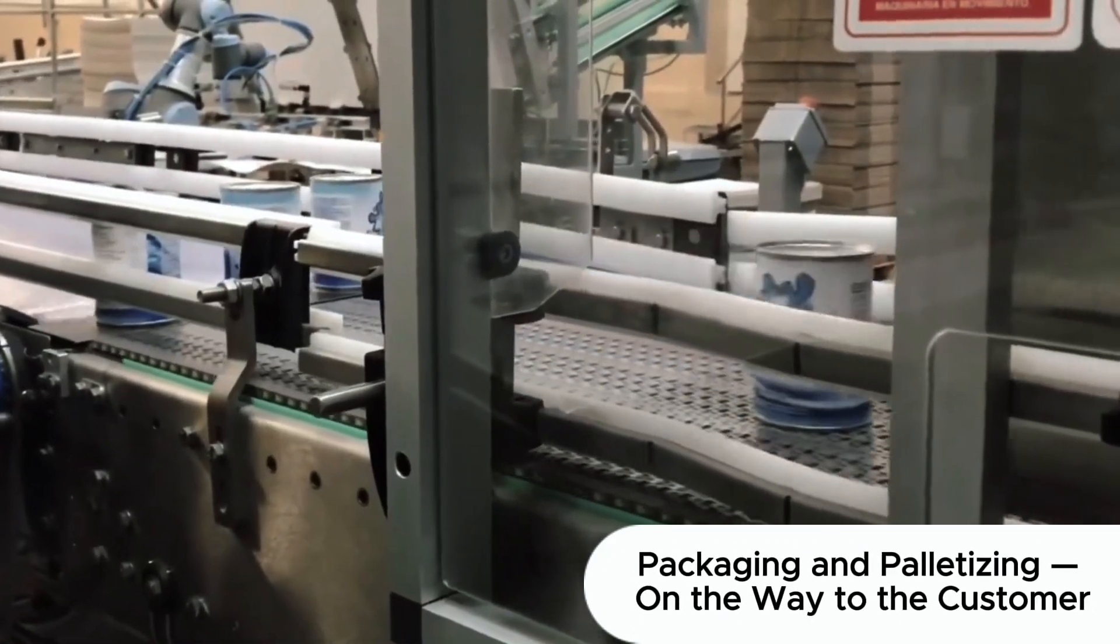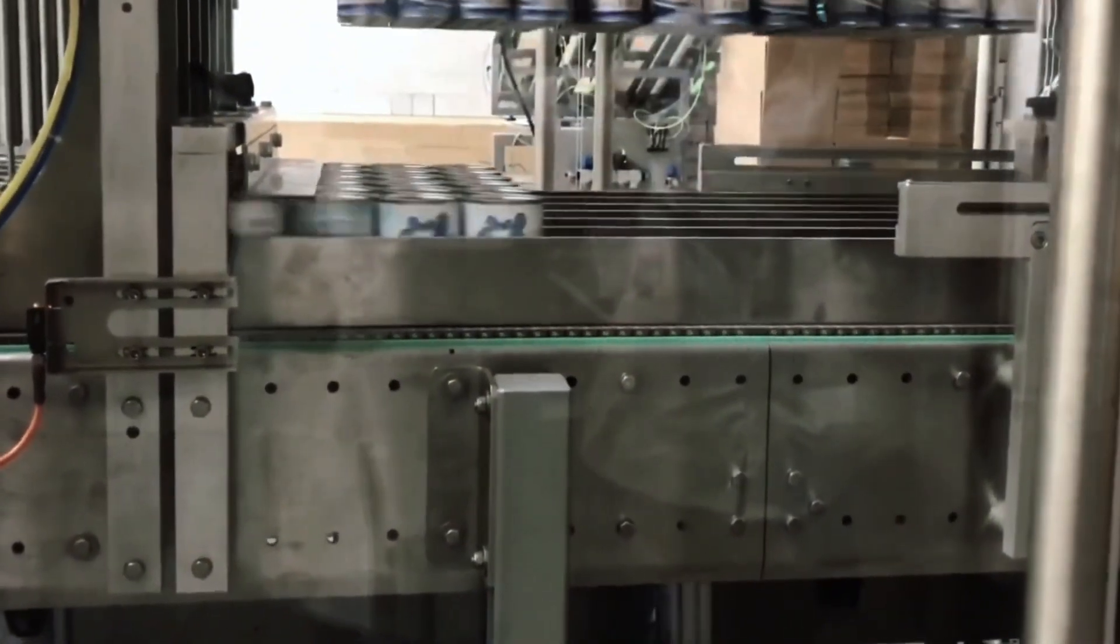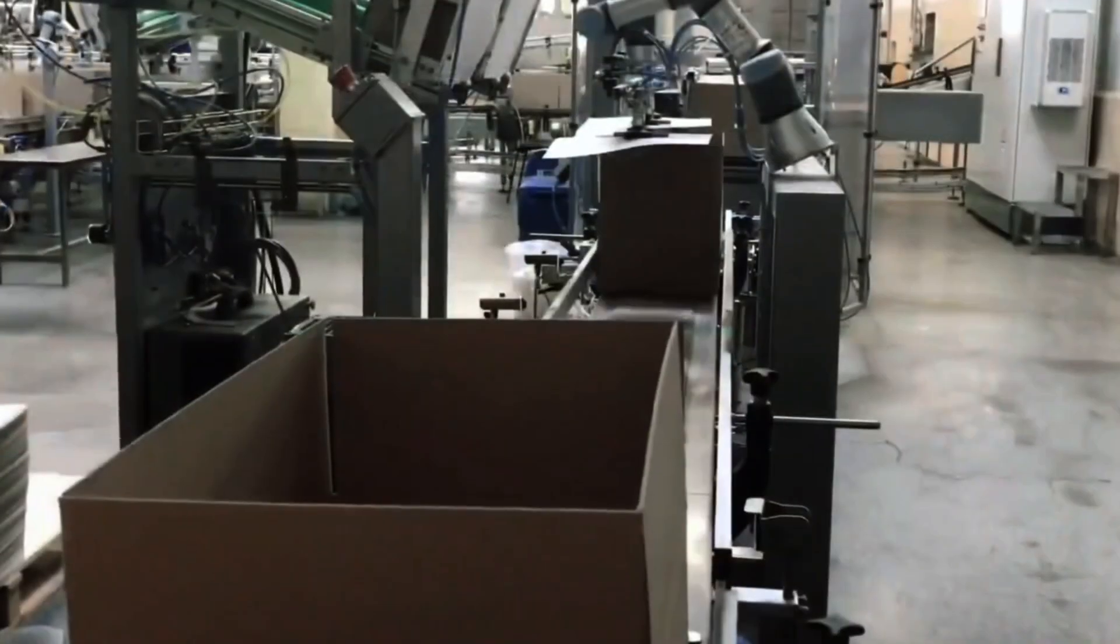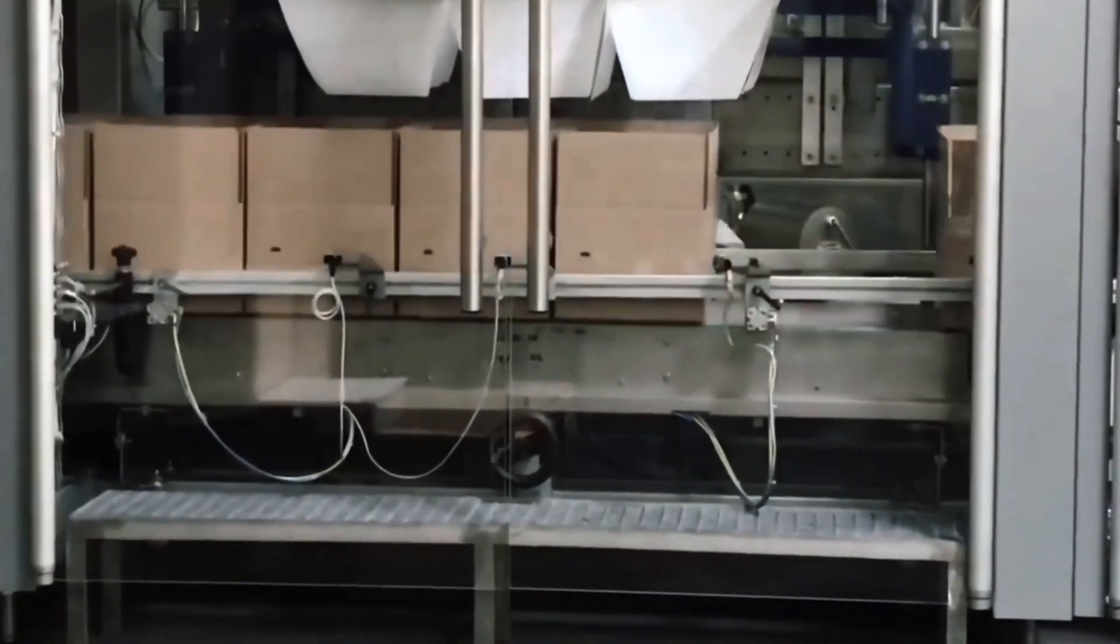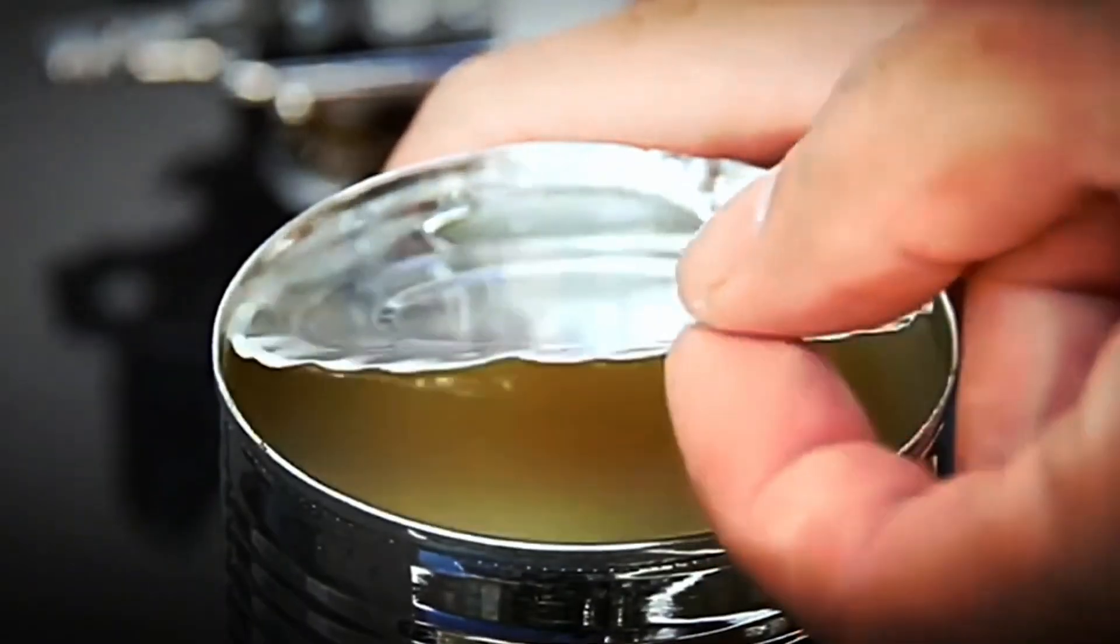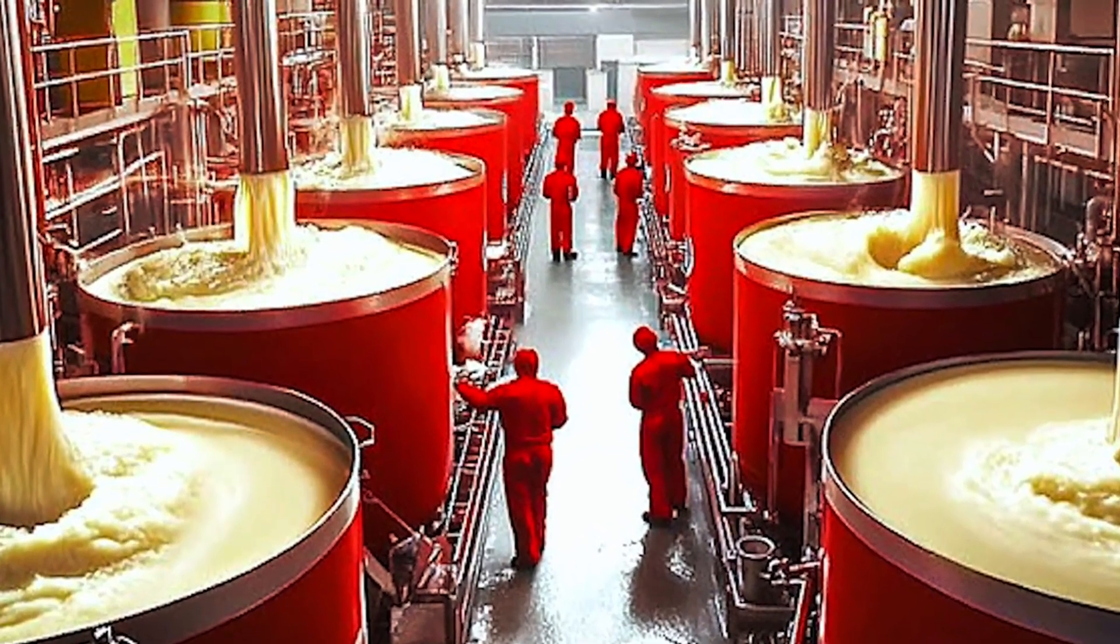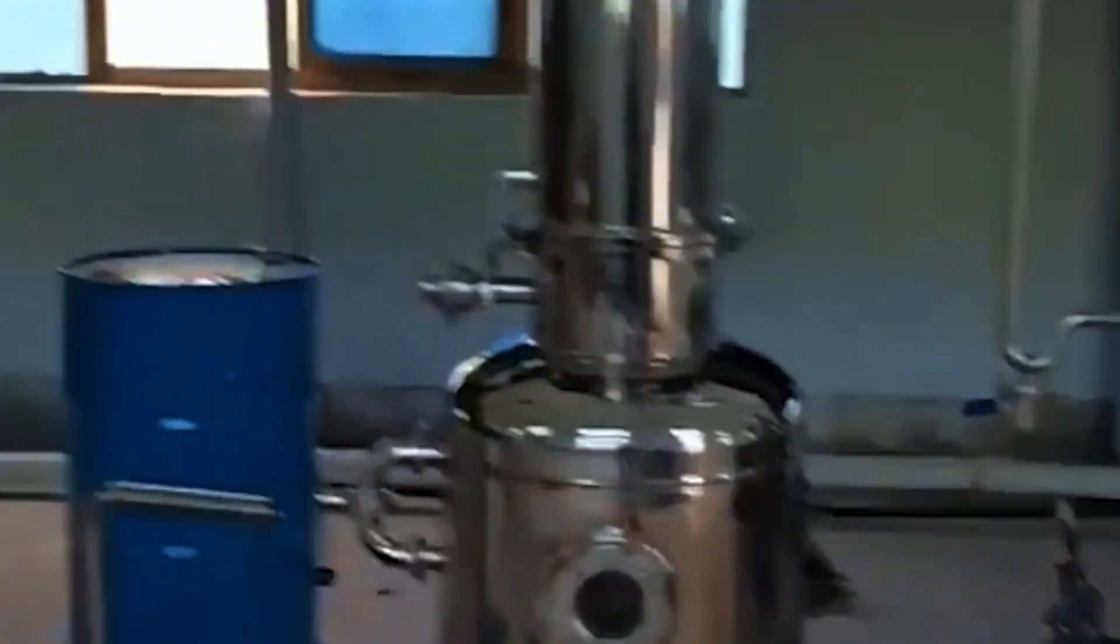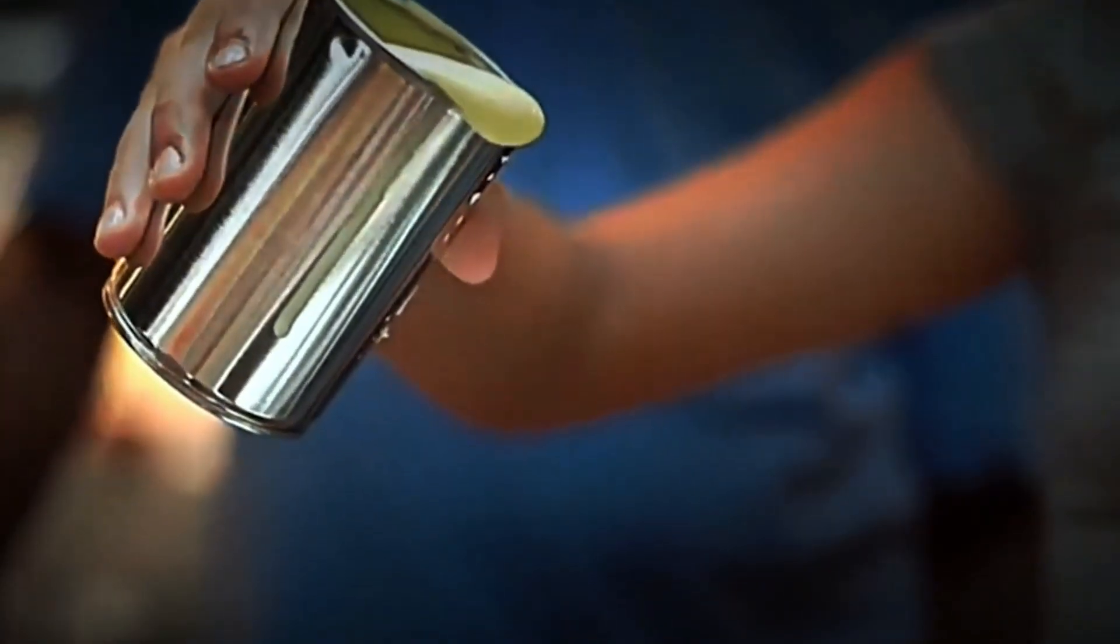Once labeled, cans are grouped into packs of 6, 12, or 24 units, depending on customer requirements. They are wrapped in shrink film and placed onto pallets. Robotic arms stack them with precision, optimizing layout for transport and storage. The completed pallets are marked and sent to logistics warehouses, where they await shipment to retailers. At modern facilities, both palletizing and inventory storage are fully automated, controlled by digital systems to maximize efficiency.